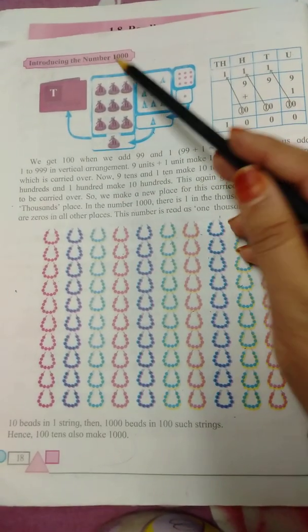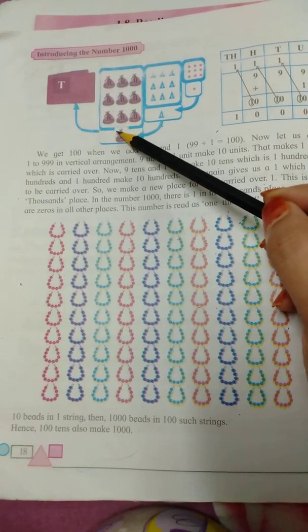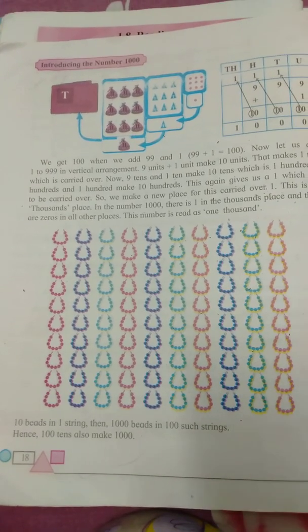Now, what makes a thousand? 10 hundreds make 1000. What makes a hundred? 10 tens make 100.